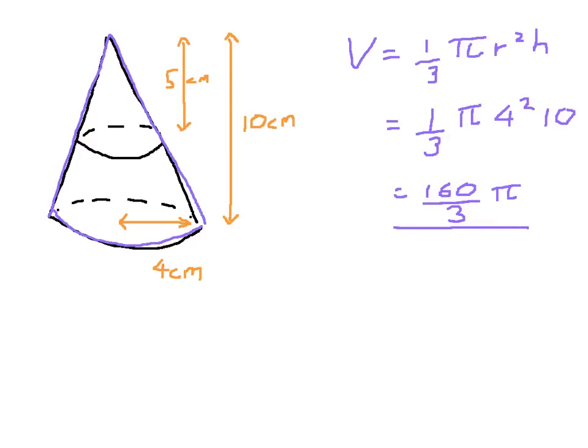Now if I want the volume of just the frustum, I'm going to have to take away the little cone on top here that I've just outlined in green. Now I have the height of that cone as five centimeters. I obviously need the radius of the circle at the bottom.